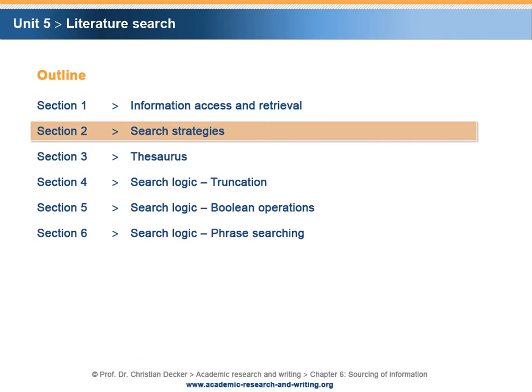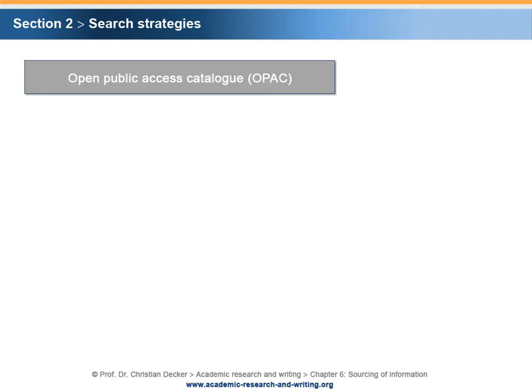Section 2 – Search strategies. The starting point for literature research is a library catalogue. The majority of libraries can be accessed via an Open Public Access Catalogue, or OPAC for short. As pointed out before, OPACs are web-based, allowing users to search for literature via the Internet from remote locations, for example from home. OPACs use a search logic that allows the use of intelligent search requests. The underlying logic varies from catalogue to catalogue, and it is advisable to inform oneself about the search logic before starting a literature search process.